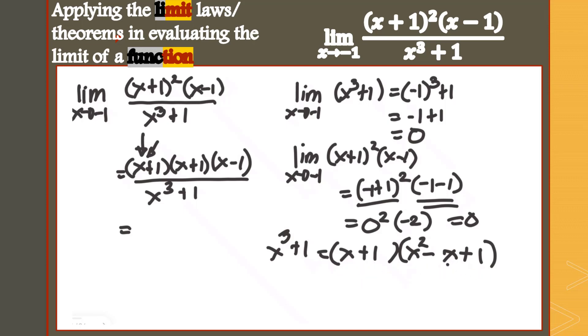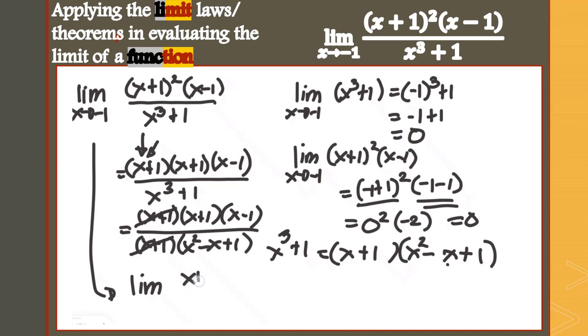Now let's use this for our function. (x+1)(x+1)(x-1) over (x+1) times (x²-x+1). So we can cancel this now. What happens to our actual form now will be the limit of (x+1)(x-1) over (x²-x+1) as x approaches negative 1.